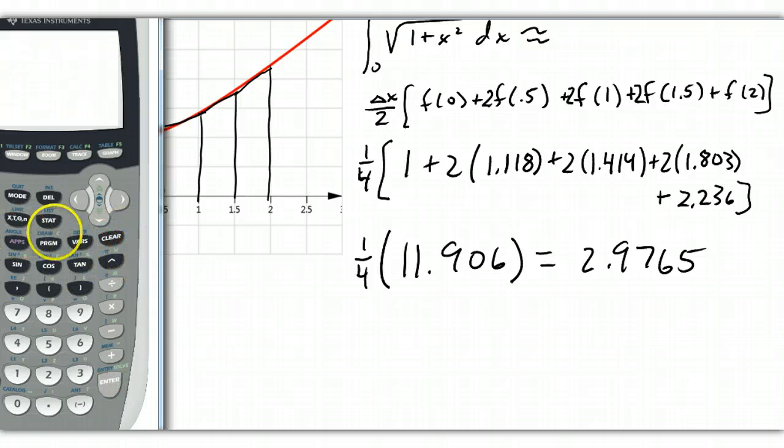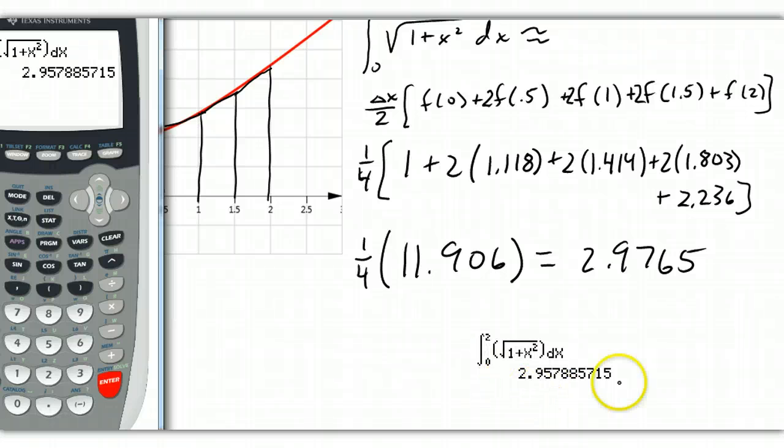Well, just for fun, let's go ahead and integrate that on our calculator. So I'm going to go from 0 to 2 of the square root of 1 plus x squared, and that's in terms of x, and we hit enter, and look at that. Just using four trapezoids, we got a pretty good approximation, didn't we? That's all there is to it.